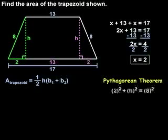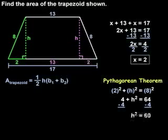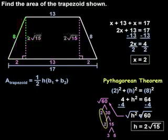We have 2 squared plus h squared equals 8 squared, or 4 plus h squared equals 64. Subtracting 4 from both sides, we have h squared equals 60. And square rooting both sides, we find that h equals 2 root 15.